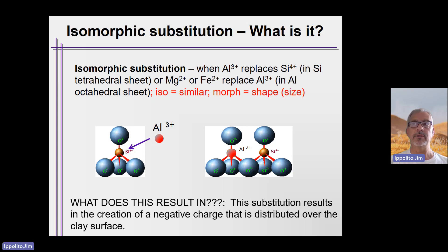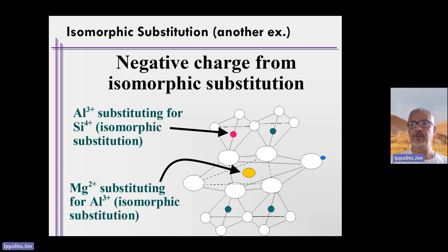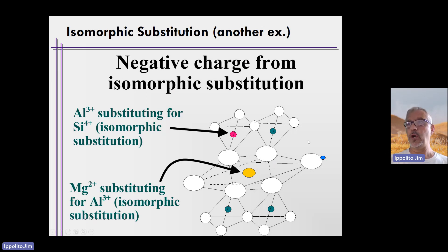Isomorphic substitution results in a permanent negative charge. It's permanent because of the natural weathering scheme and the replacement of the initial cation within either the tetrahedron or the octahedron with another cation that has not yet been weathered out of the system. In the tetrahedral sheets, the initial atom in the center is silicon Si⁴⁺, and it is often replaced with aluminum Al³⁺, so you lose a positive charge — or equivalently, you gain a negative charge in that sheet.